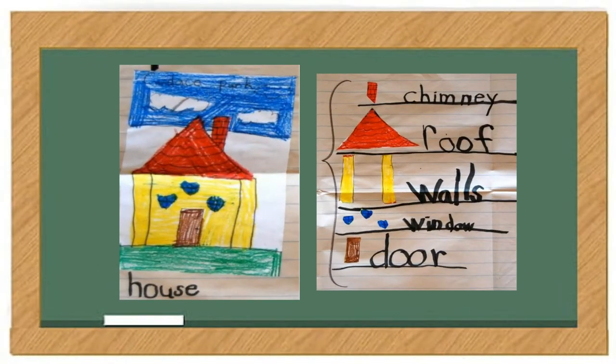Here's an example, a first grade example, of a house. And you can see here that this student broke the house down into chimney, roof, walls, window, and door. They took a concrete, physical object, and they broke it down into its parts.